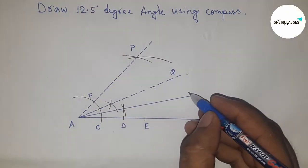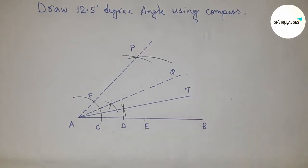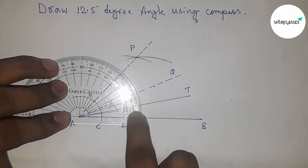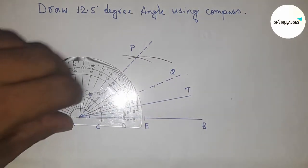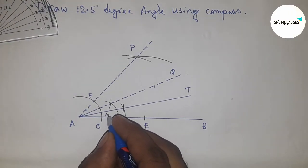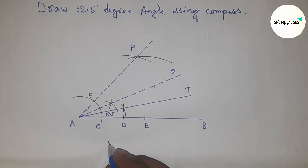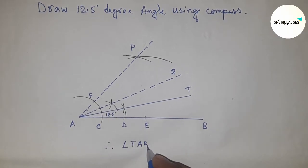This is point T, so angle TAB is 12.5 degrees. Now checking whether all angles are correct. This is perfectly a 12.5 degree angle. Therefore, angle TAB equals 12.5 degrees.